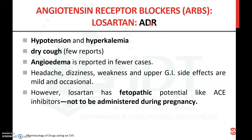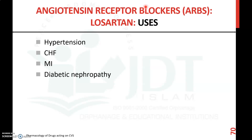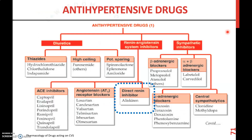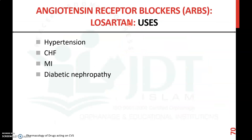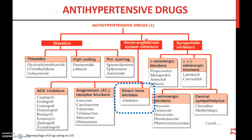The uses of angiotensin receptor blocking agents include treatment of hypertension, congestive heart failure, myocardial infarction, and diabetic nephropathy. That covers the second class of drugs acting on the renin-angiotensin system — angiotensin receptor blocking agents such as losartan.